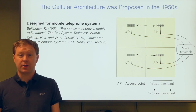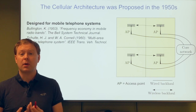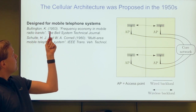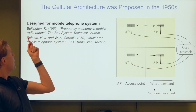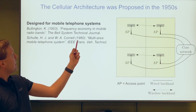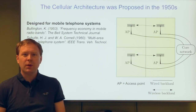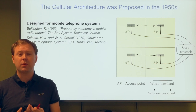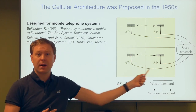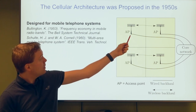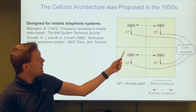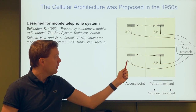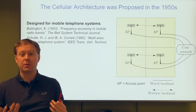So what is a cellular architecture? It underlies all the mobile communication networks we have today, and this idea goes all the way back to the 1950s. Bullington, in a 1953 paper, discussed frequency economy in mobile radio bands, and another paper from 1960 addressed multi-area mobile telephone systems. The whole idea was to provide telephone services wirelessly over a large area. They realized that to do that properly, the region needs to be divided into sub-areas called cells, each with an access point connected via backhaul to a core network.